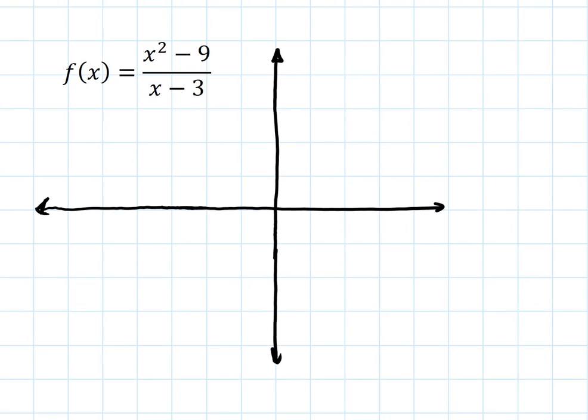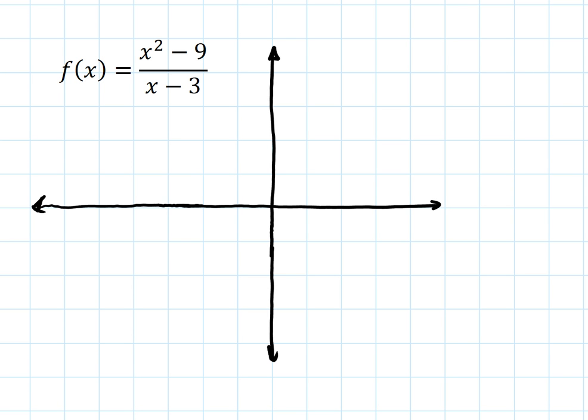Now, sometimes we can have a place where a function is discontinuous because of a hole in it. So if I look at this particular function f of x, that numerator is the difference of two squares. It's x minus 3 times x plus 3, and it's all over x minus 3. When I look at this, there's a common factor of x minus 3 I can cancel out.